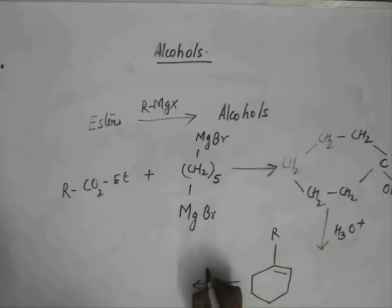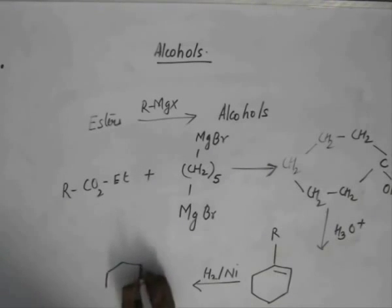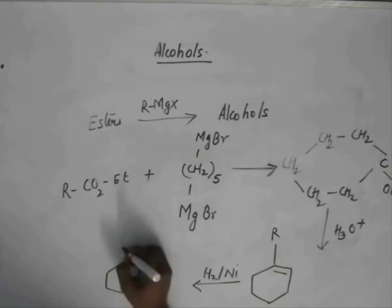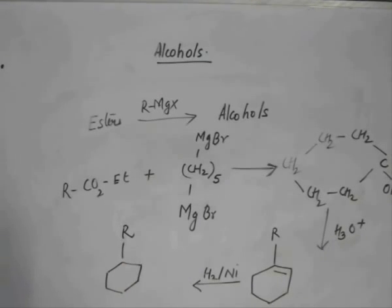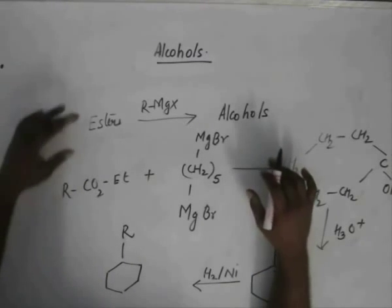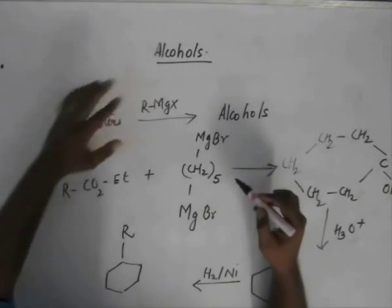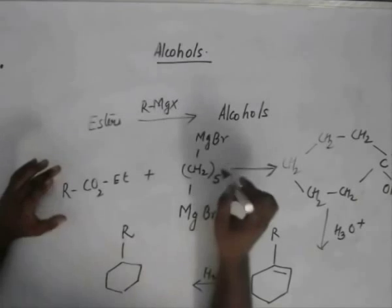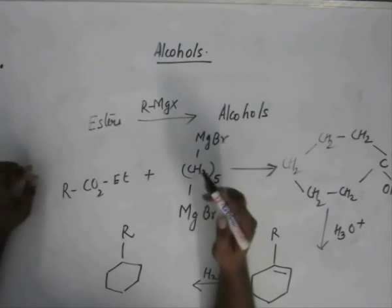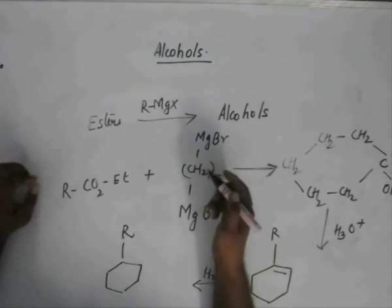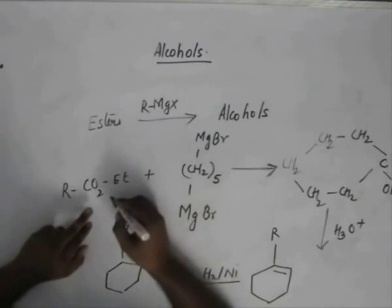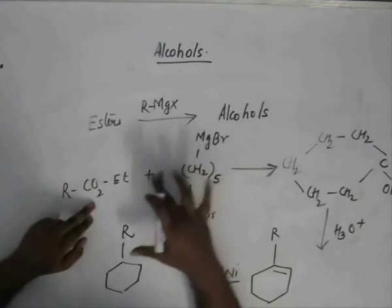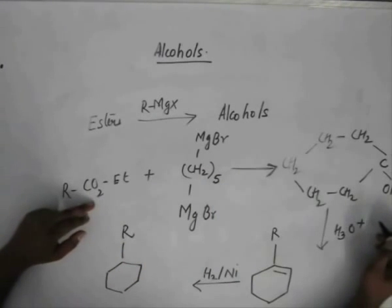Now, if we want to prepare the corresponding alkane, we just use activated hydrogenation. I hope you understand this reaction. Because esters are attacked with Grignard reagents twice to give us tertiary alcohols. In this case, I used a specific Grignard reagent which had two nucleophilic centers, so it attacked the same ester molecule with its two nucleophilic centers to give rise to this cyclic structure.